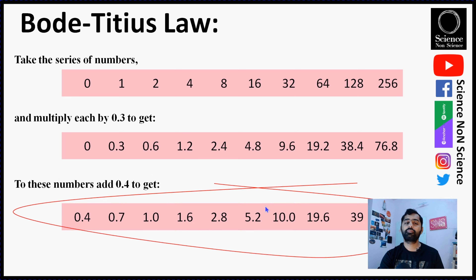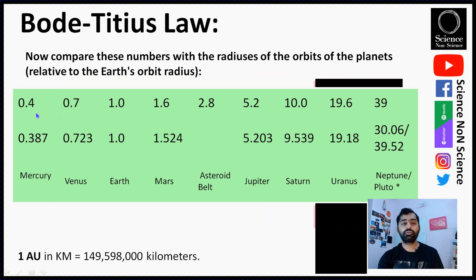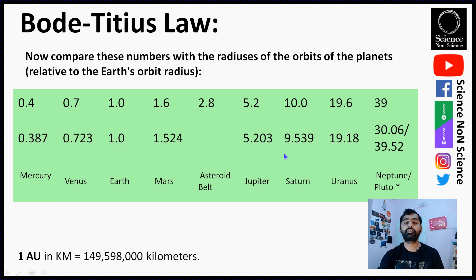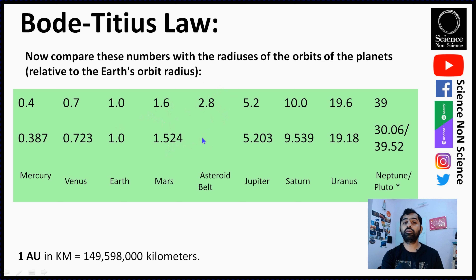The numbers derived from the Bode-Titus law closely match the actual orbital radii of the planets around the Sun. For Mercury the match is slightly off, but for Venus, Earth, and Mars it is very close. There is one extra predicted orbit between Mars and Jupiter where no planet exists — I'll return to that shortly. The law predicts Jupiter, Saturn, and Uranus well. The only significant problem is that it does not predict Neptune's orbit, though it does predict Pluto's.